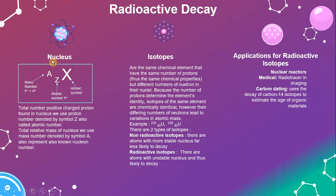This diagram shows the labeled position of the nucleus. The total number of positive charges (protons) found in the nucleus is the proton number, denoted by the symbol Z, also called the atomic number. The total relative mass of the nucleus is the mass number, denoted by the symbol A, also known as the nucleon number.